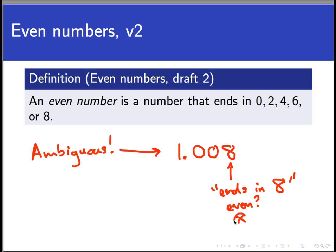So the problem here is that we haven't been precise enough about our terms in our definition. We haven't described what we mean by a number precisely. And we haven't really talked about what it means to end in something. 1.008 is not what we want to be identified as an even number, but our definition does it. So we have some work to do.